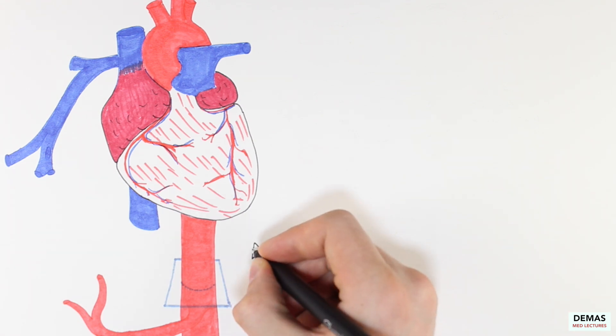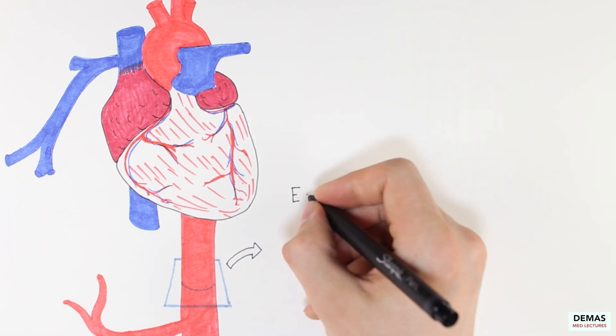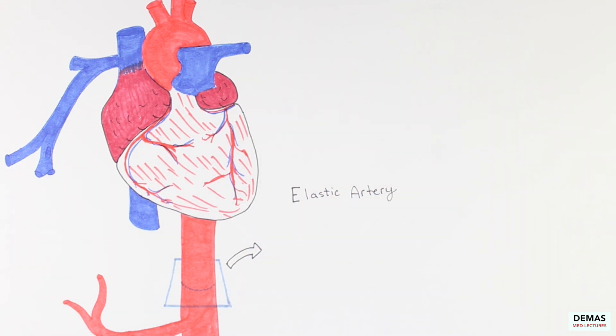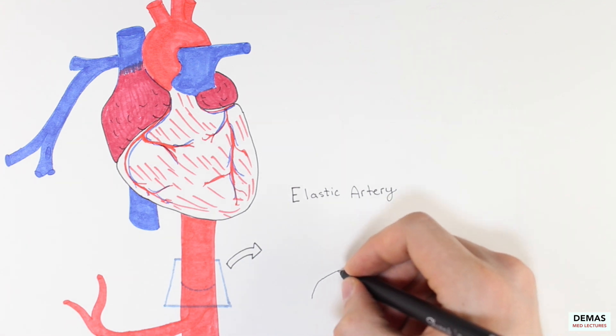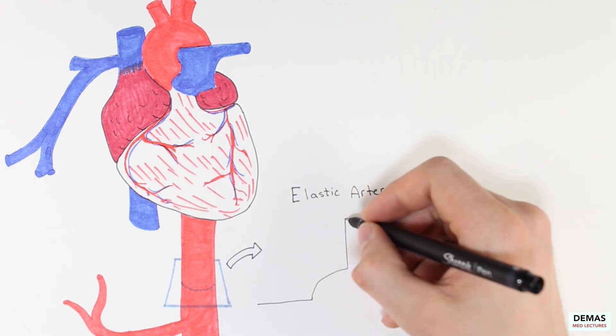The largest arteries coming directly off the heart, such as the aorta, are called elastic arteries. These arteries are actually quite thick, elastic as in the name, and durable.